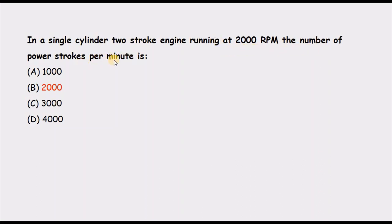In a single-cylinder two-stroke engine running at 2000 rpm, the number of power strokes per minute is? In a two-stroke engine, one power stroke is produced per revolution of the crankshaft — one cycle with one power stroke is completed in one revolution. So if the engine runs at 2000 rpm, the crankshaft rotates 2000 times per minute, giving 2000 power strokes per minute.